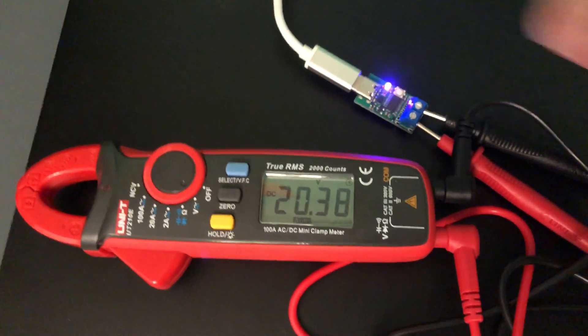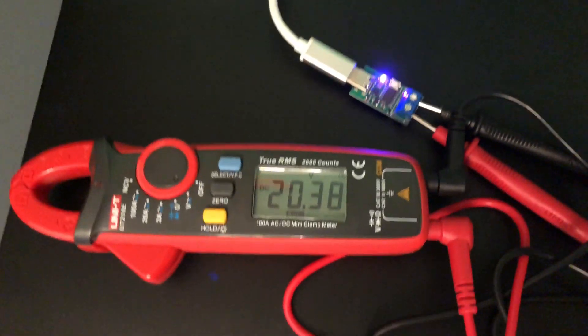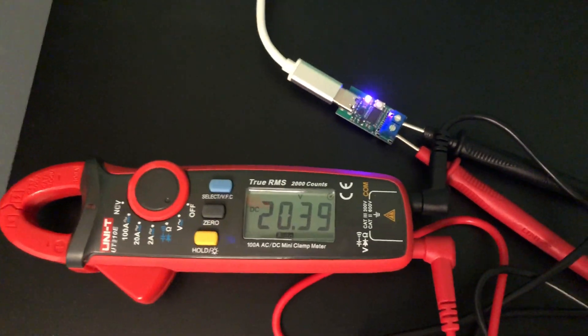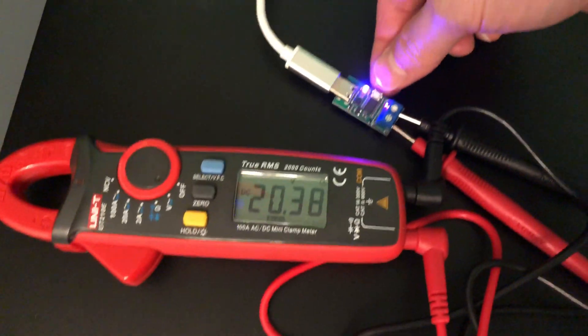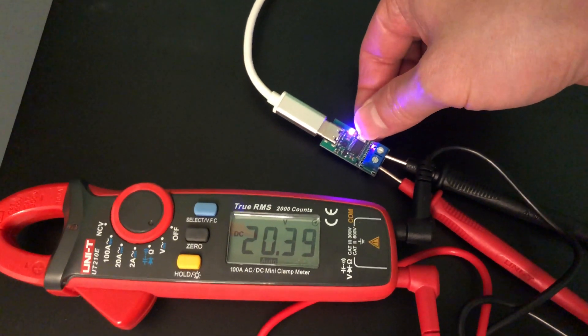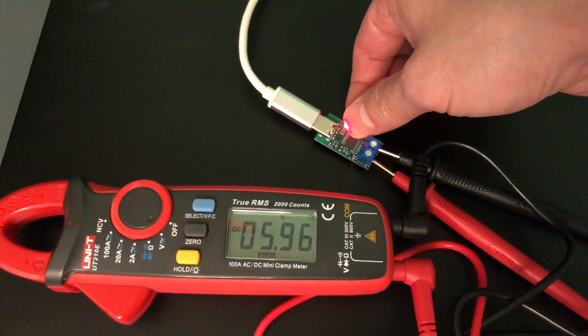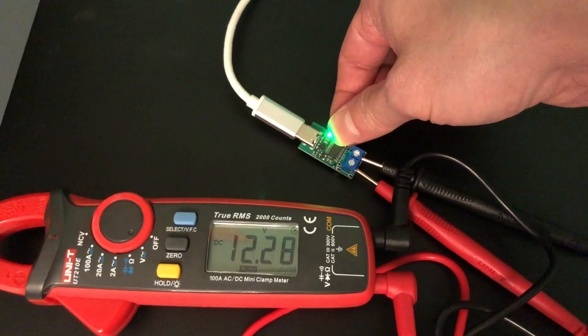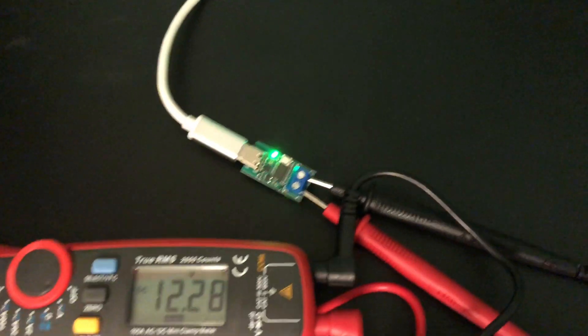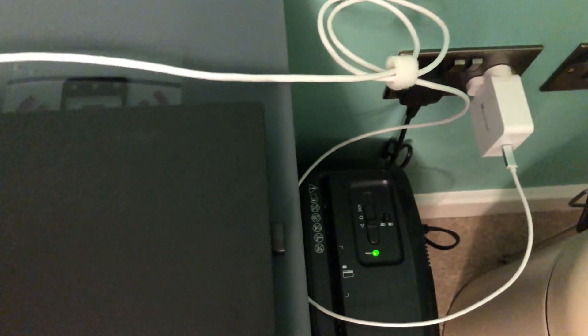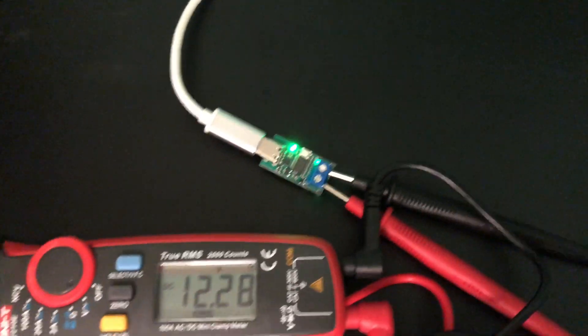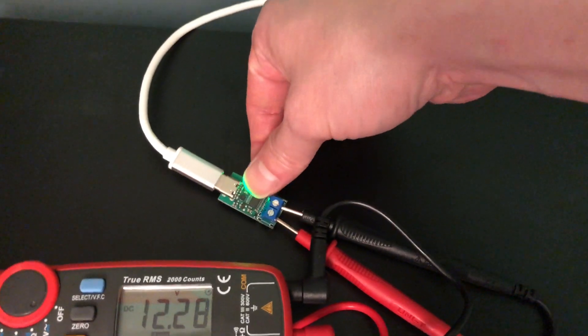This is very handy for powering things that have different voltage requirements. For example, if you have a CCTV camera that needs 12 volts, you can just set this to 12 volts and wire up your CCTV camera to power it with a standard USB-C PD power supply.